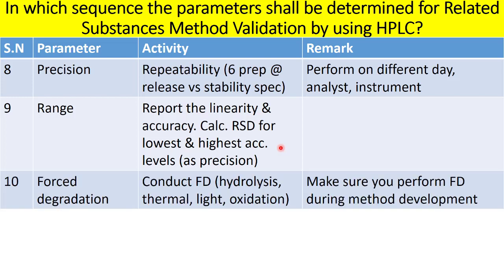The tenth parameter is forced degradation. As mentioned, specificity parameters were performed at the beginning without including forced degradation. You can conduct forced degradation at the latter phase of validation. Parameters to be conducted include hydrolysis by water or at different pH such as acidic and alkaline, thermal degradation, light degradation, and oxidation degradation. You can then assess peak purity, mass balance, and percent degradation. It is very important to conduct a mini-validation during method development itself.